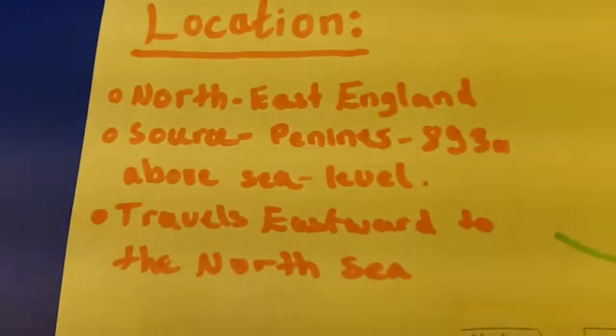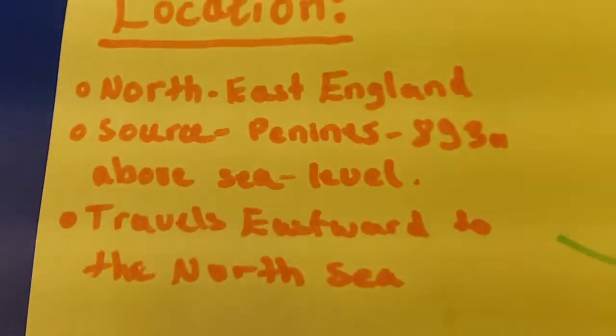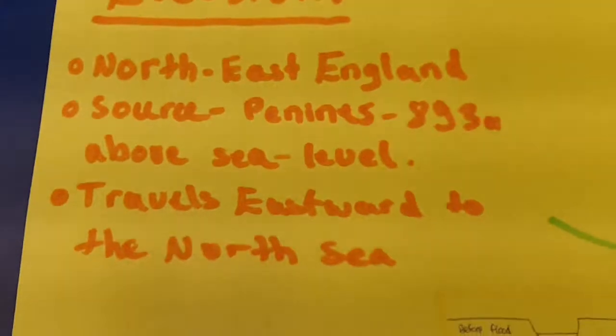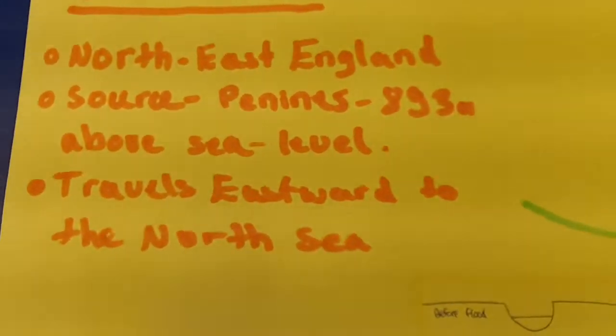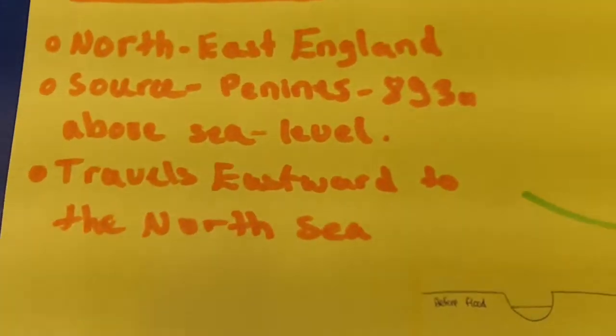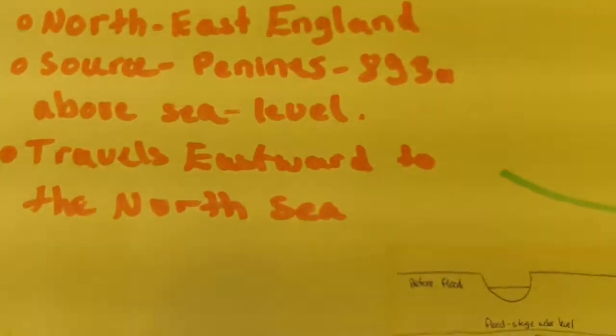The River Tees is located in northeast England. It's sourced at the Pennines, 893 metres above sea level. It travels eastward towards its mouth, which is located in the North Sea.